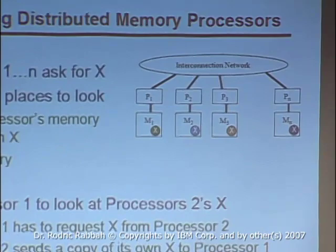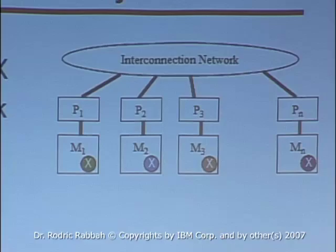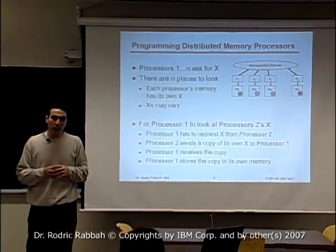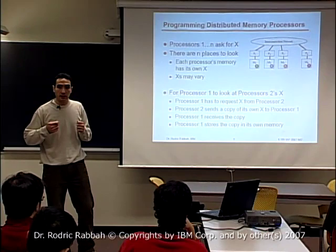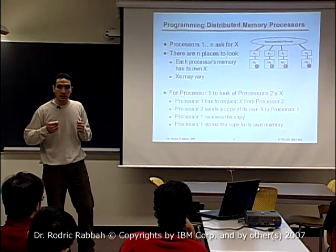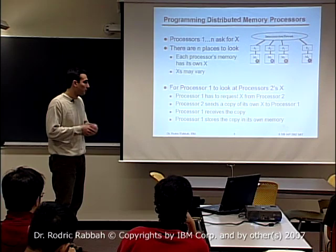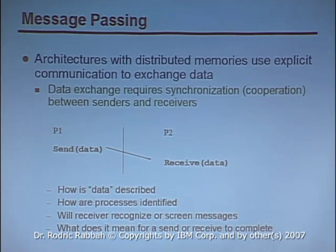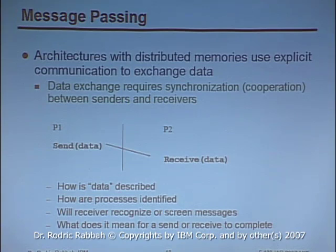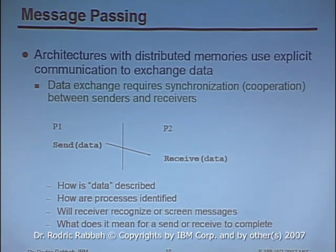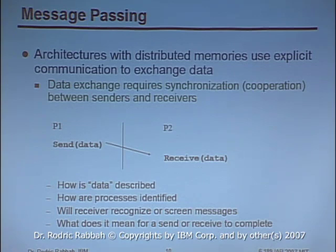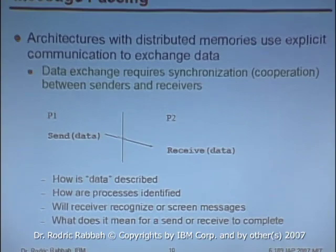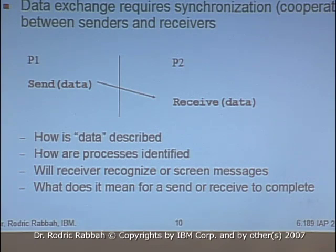Message passing exposes explicit communication to exchange data. There are different kinds of data communications, but the concept of what you exchange has four things to address: how is the data described and what does it describe; how are processes identified; are all messages the same; and what does it mean for a send or receive operation to complete — is there some acknowledgment process? An example message passing program: you have a two-dimensional space with points B (blue circles) and points A (golden squares), and for every point in A you calculate the distance to all points B — N squared interactions.